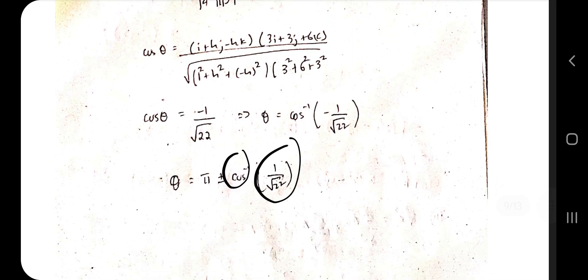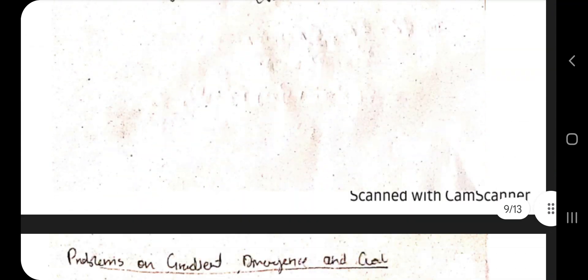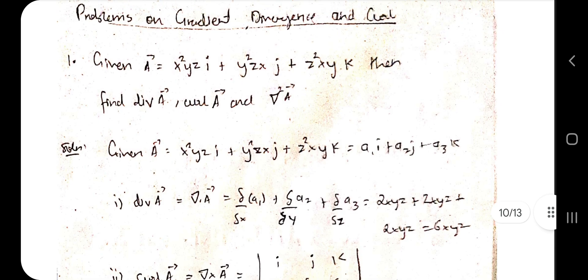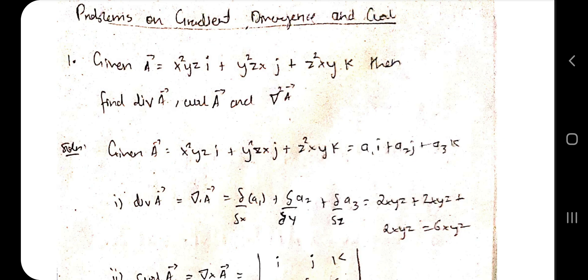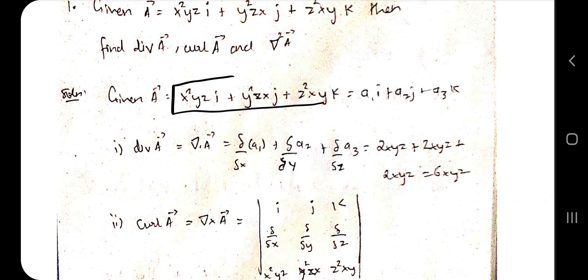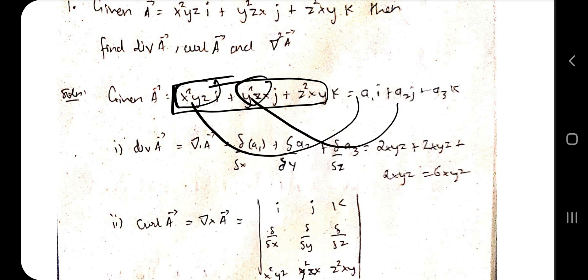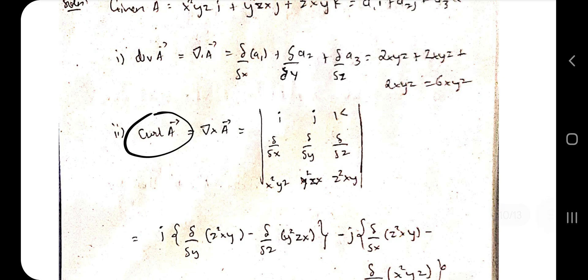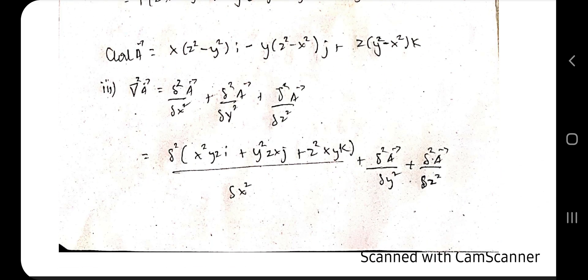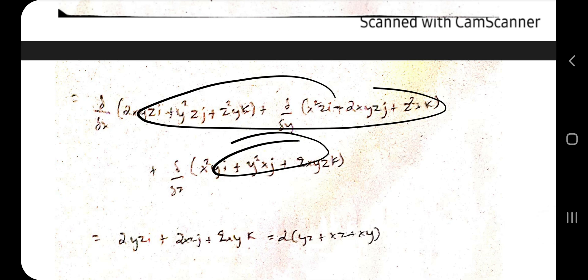Moving on to divergence, curl, and del-squared problems. Given a vector field a with components a₁, a₂, a₃, find div a by partial differentiation: ∂a₁/∂x + ∂a₂/∂y + ∂a₃/∂z. For curl a, substitute a₁, a₂, a₃ into the determinant and evaluate. For ∇²a, differentiate the vector twice — first differentiate once, then differentiate the result again to get the final answer.